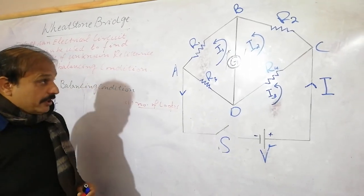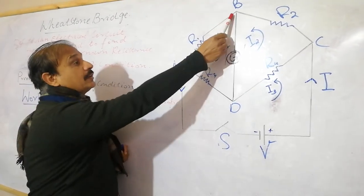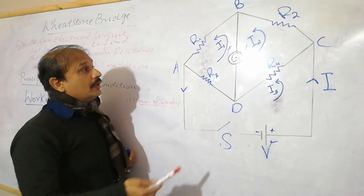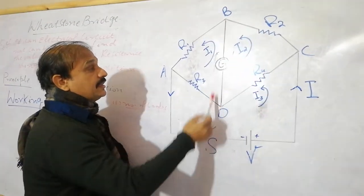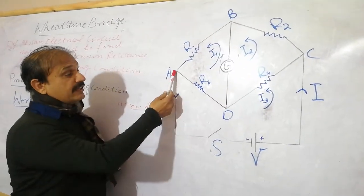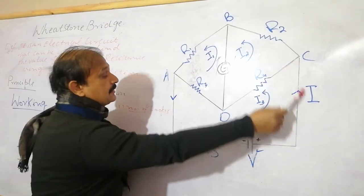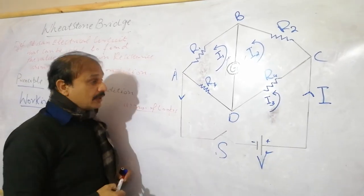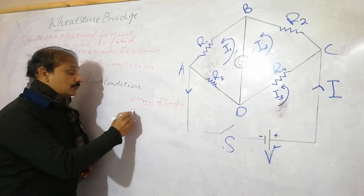To repeat, the three loops are: the first is A-B-D-A, the second is B-C-D-B, and the third is A-D-C-A. That completes the first step.